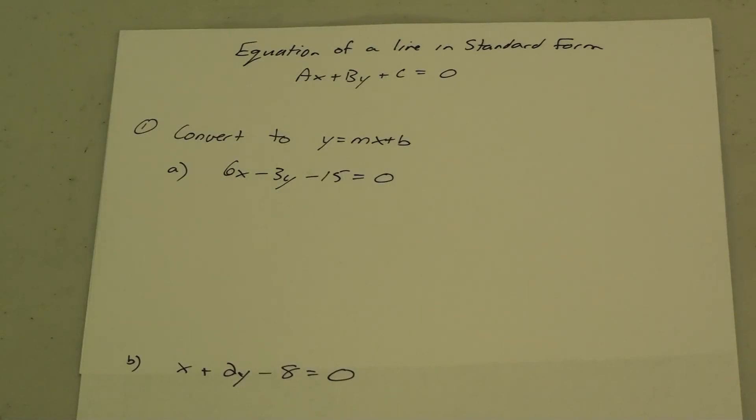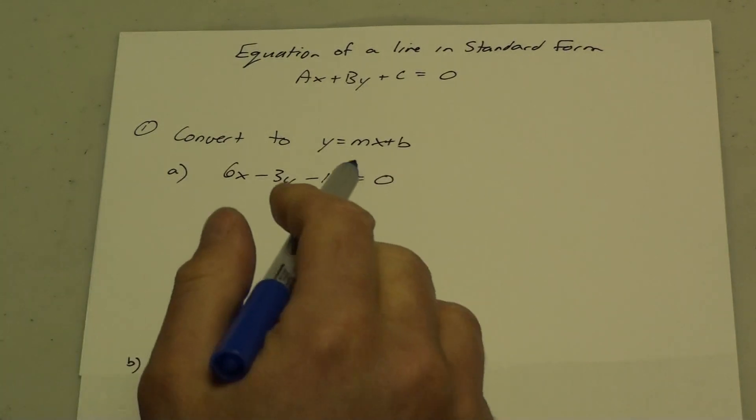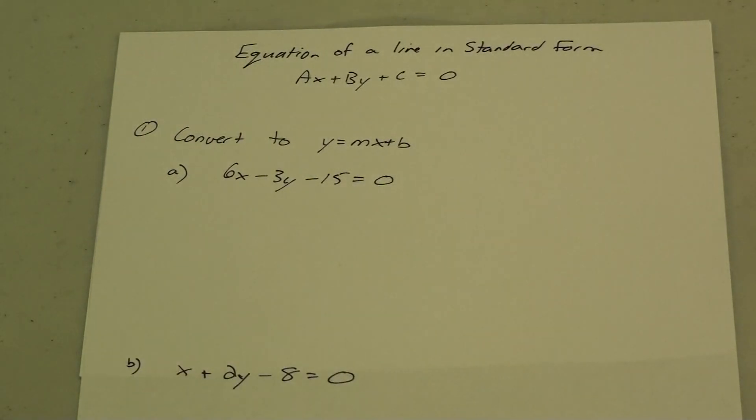This lesson is how to take an equation in standard form and put it into slope y-intercept form. Standard form is where all the x's and y's are on the same side and it's all equal to zero.